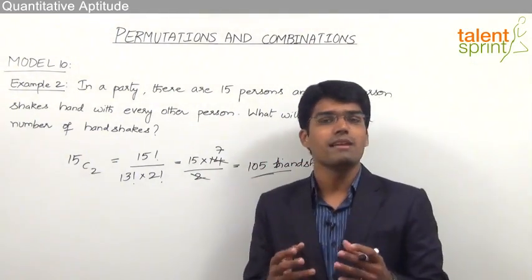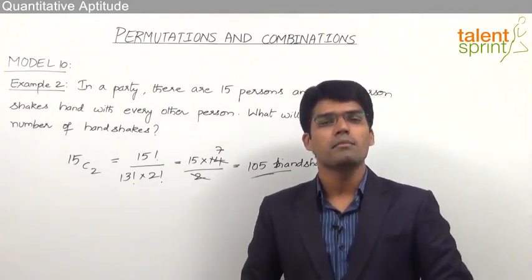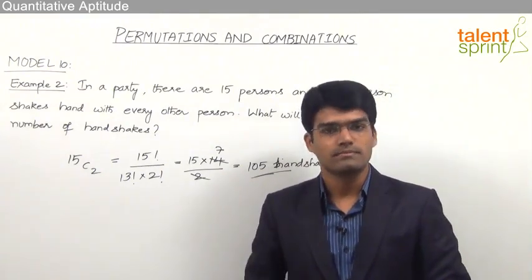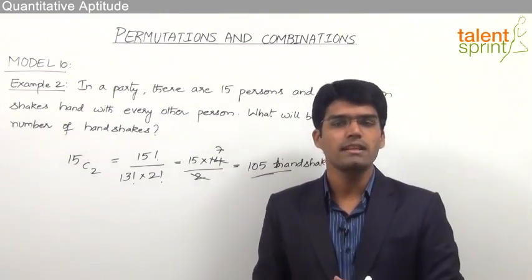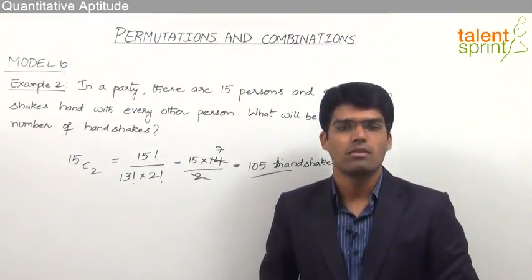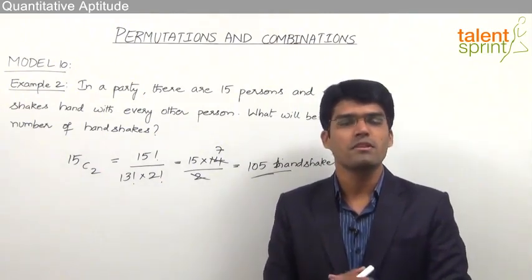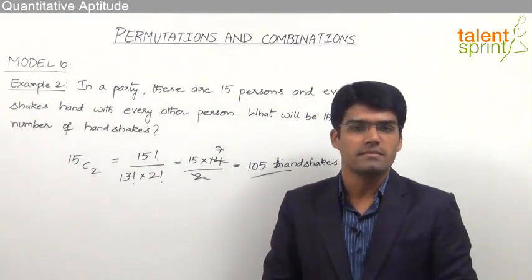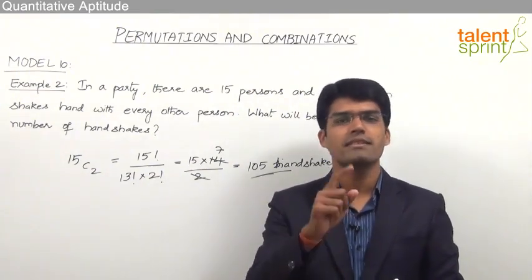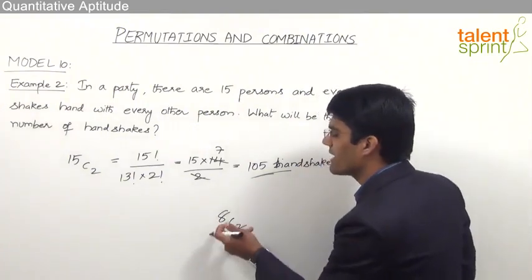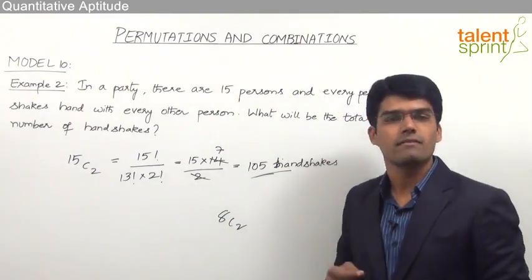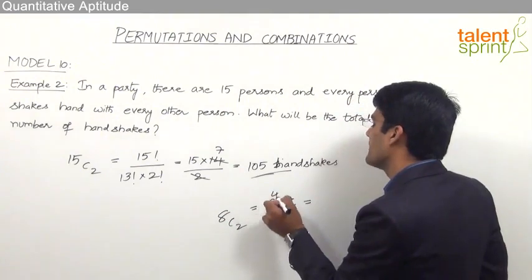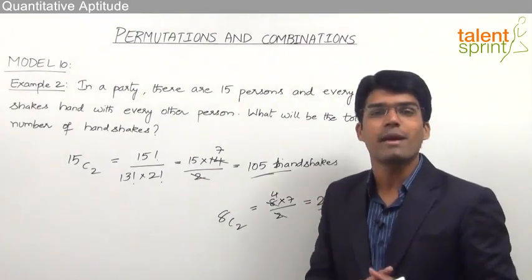A similar question can be asked about the number of matches played between teams. For example, if 8 teams participate in a world championship where every team plays every other team, the answer is 8C2, since one match requires two teams. 8C2 = 8 × 7 / 2 = 4 × 7 = 28. So there will be a total of 28 league matches in this world championship.